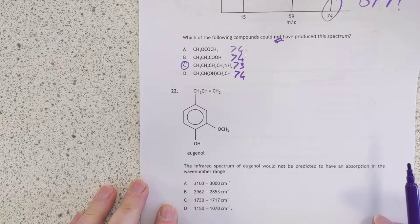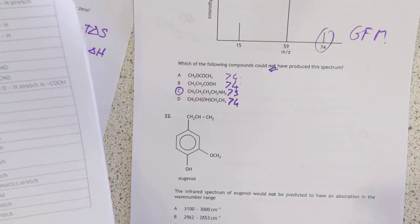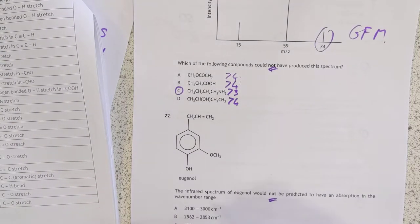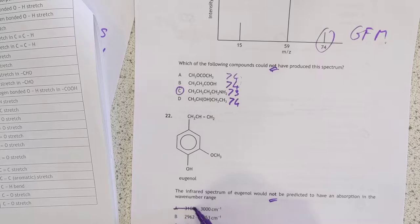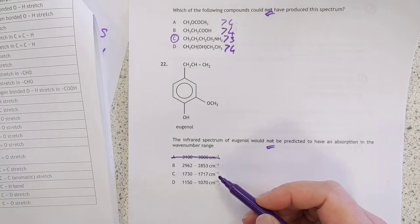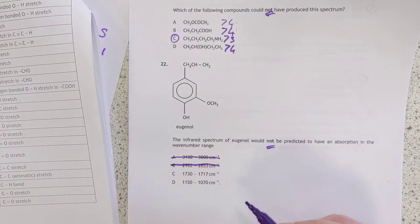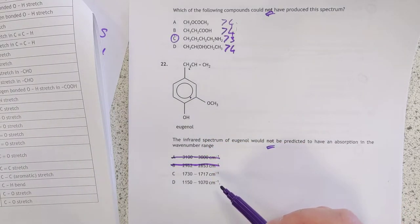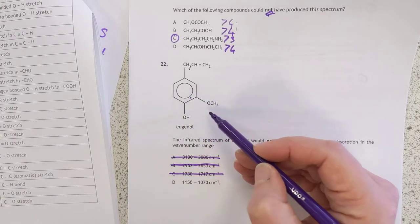22. Infrared spectrum would not be predicted to have an absorption in the wave number range. Let me go and get a date book, please. Okay. Again, don't forget the knot here. Hey, not predicted to have an absorption in the wave number range. Well, 3,100 to 3,000 is the benzene ring. So that is correct. So it's not the answer, if you know what I mean. Sorry, get it on camera. Hey, 2962 to 2853. That's the alkane stretch. The alkane CH stretch. Yeah. So I'm going to go with that not being the answer because it's got one. The same reason it's got a benzene ring. 1730 to 1717. Very specific. That's an aromatic ester, which again, this is an example of. So that's the ester group there. I'm hoping it's this one.